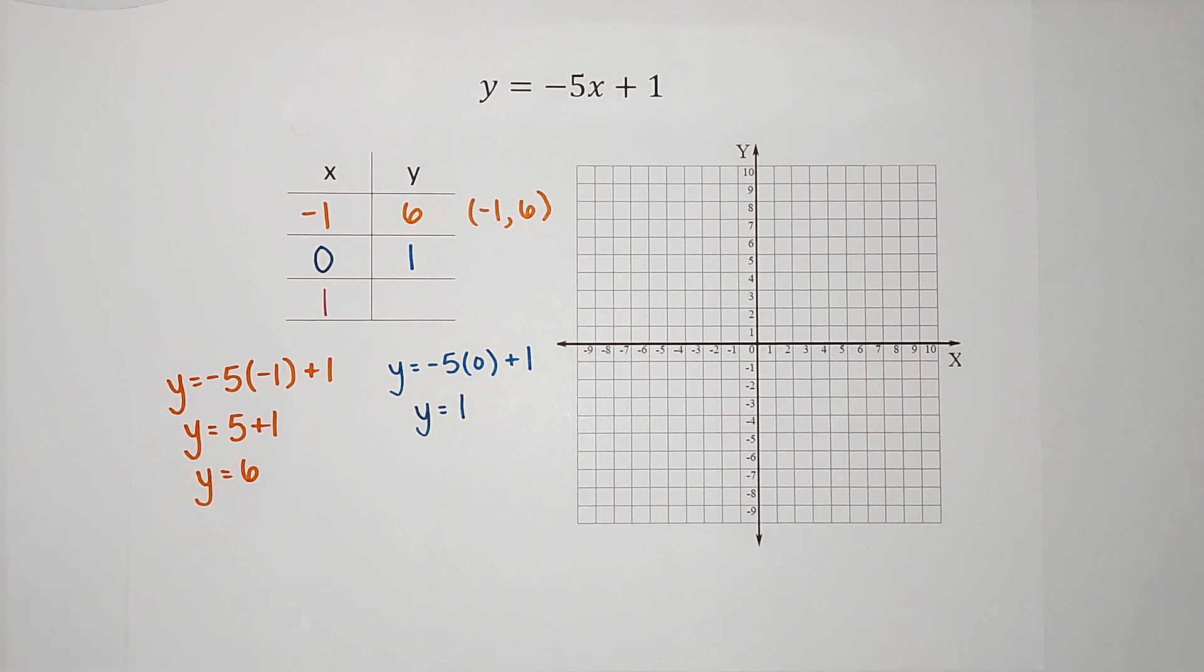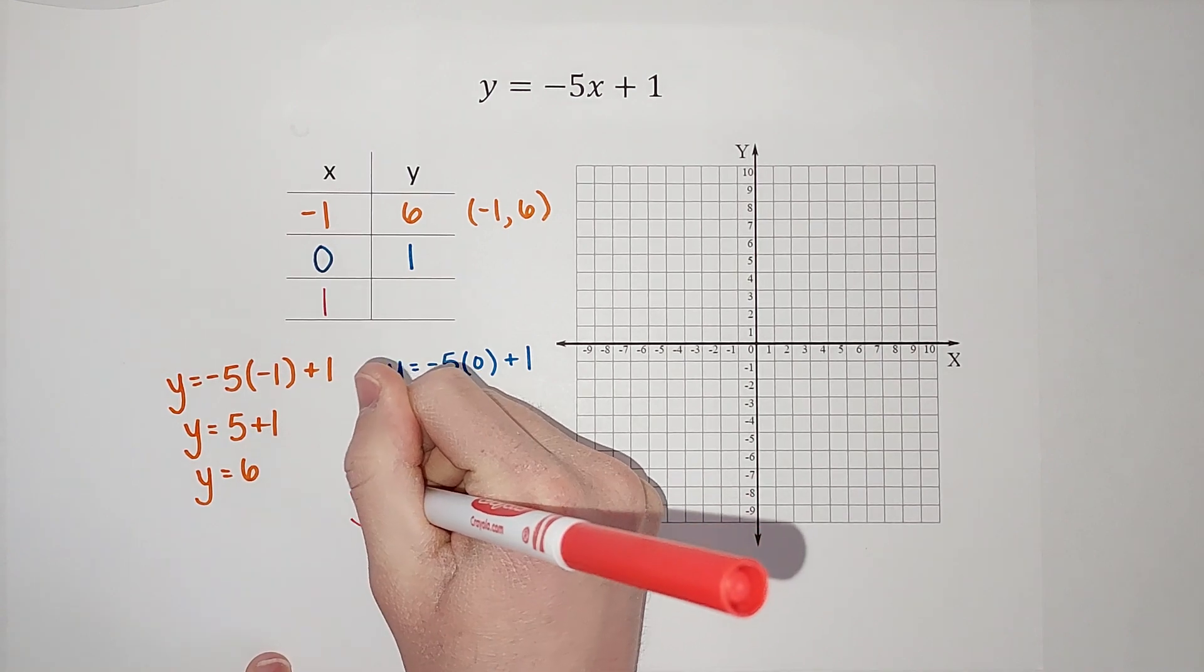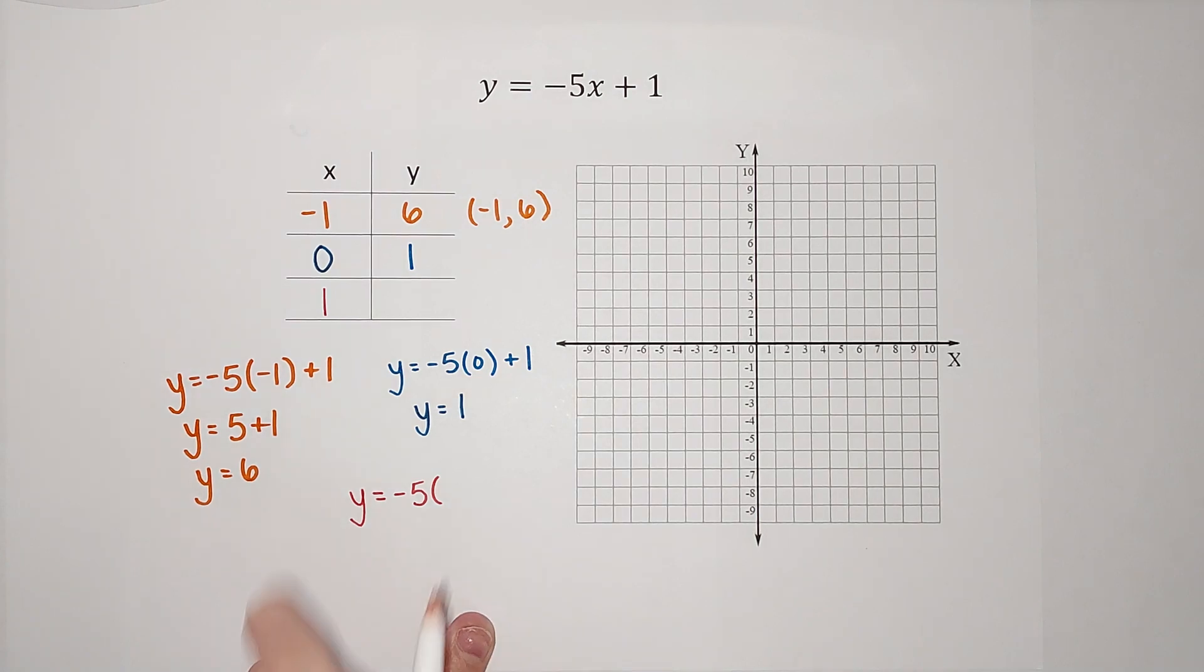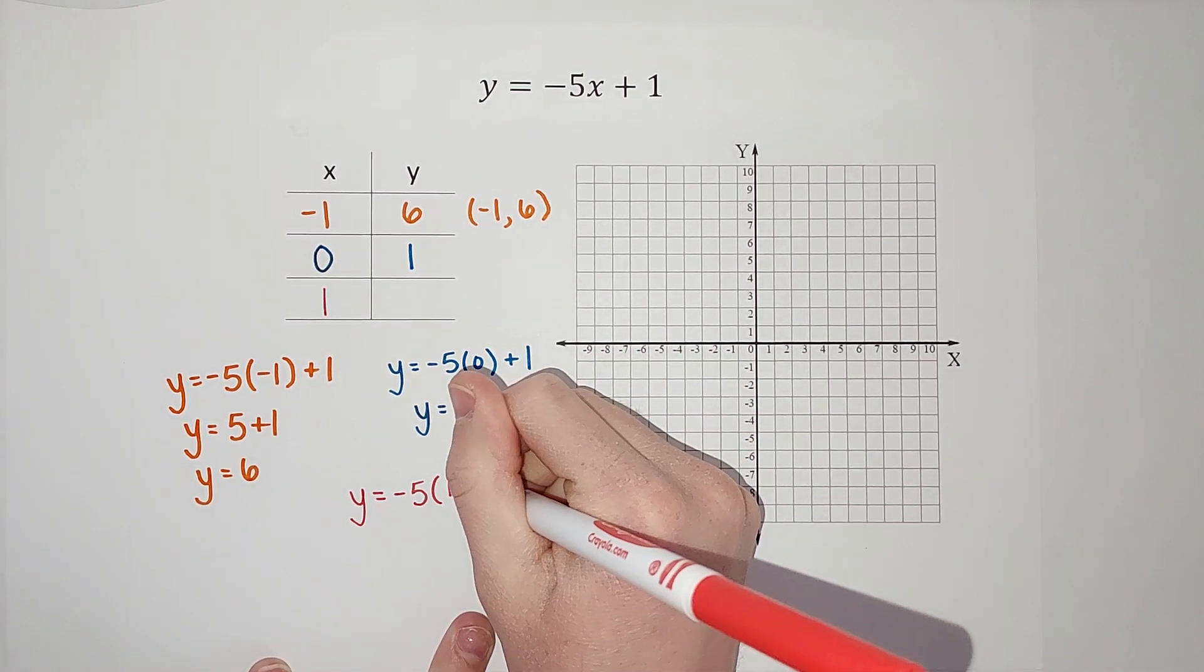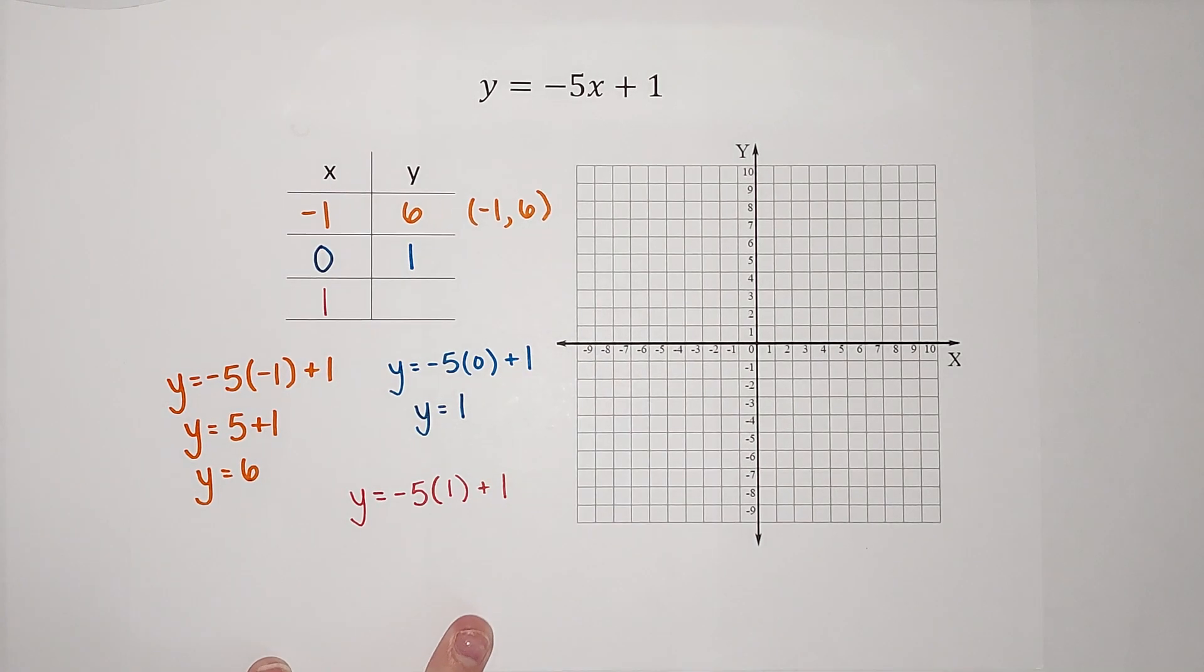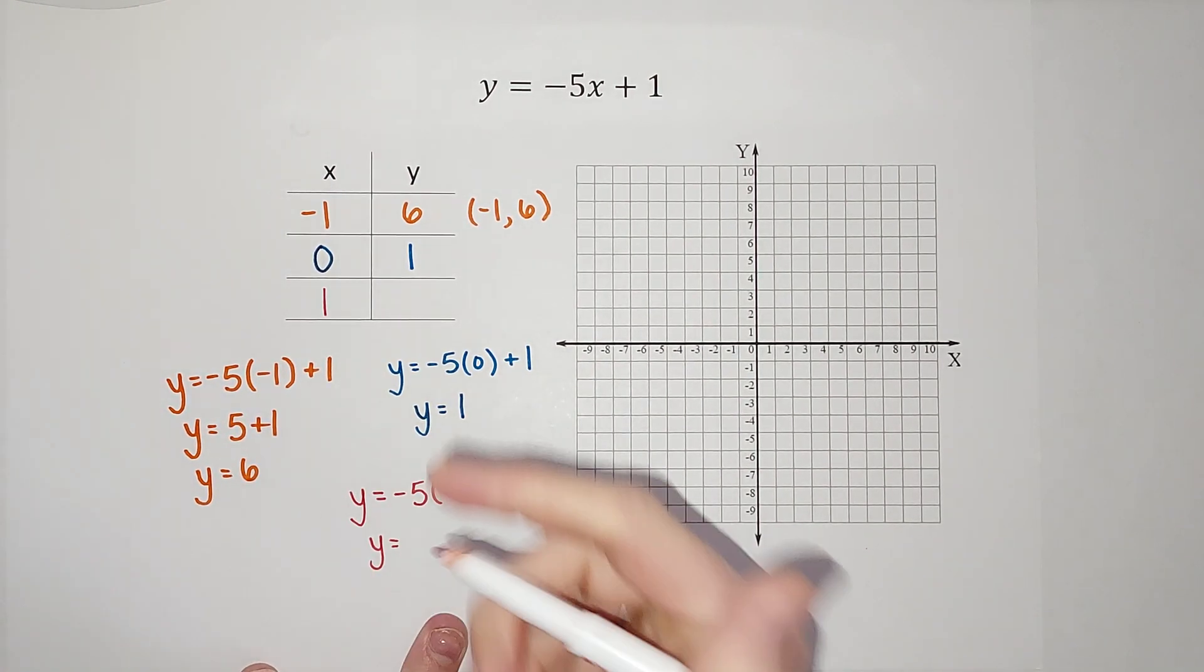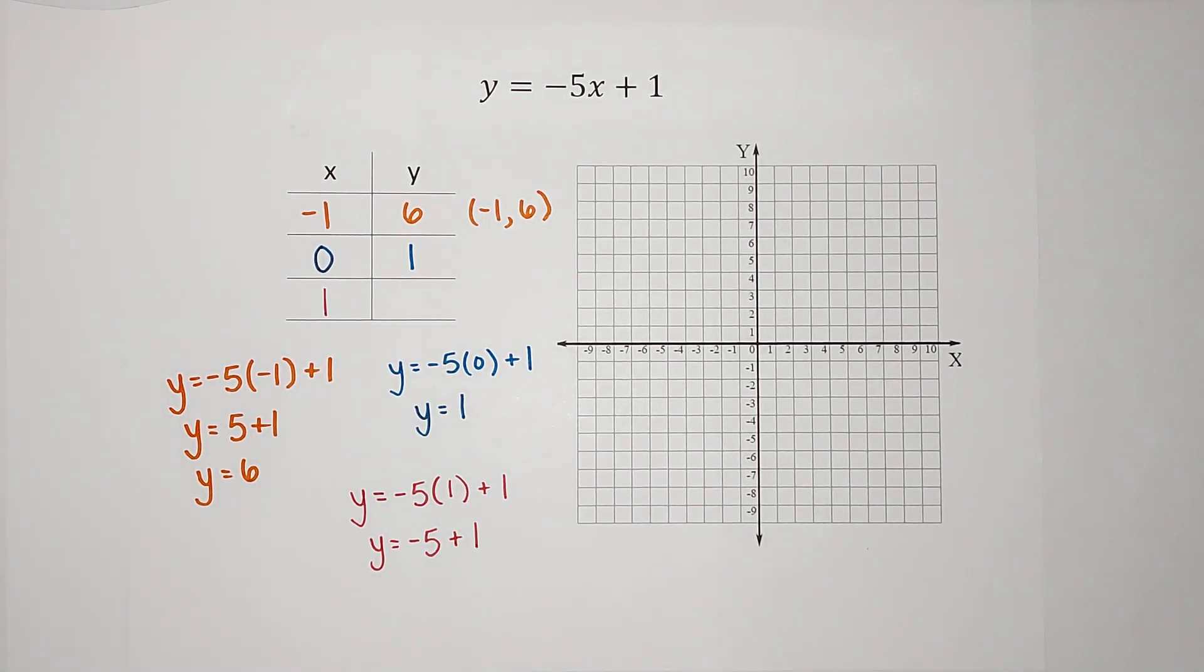What is Y when X is one? So we're going to do Y equals negative five times X, which we're plugging in one. See why we picked these numbers? Plus one. So we get Y equals negative five times one is just negative five plus one.